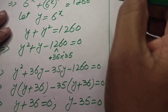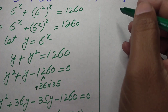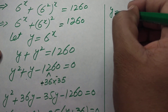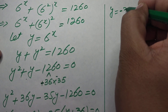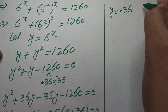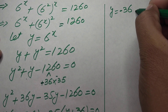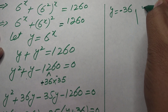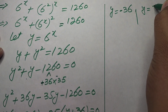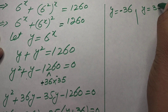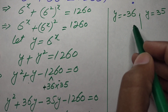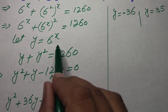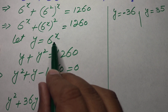This gives us (y + 36)(y − 35) = 0, so y plus 36 equals 0 or y minus 35 equals 0, yielding y equal to minus 36 and y equal to 35.